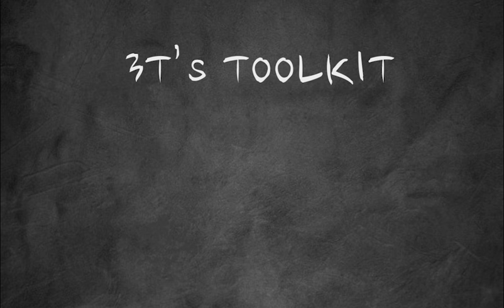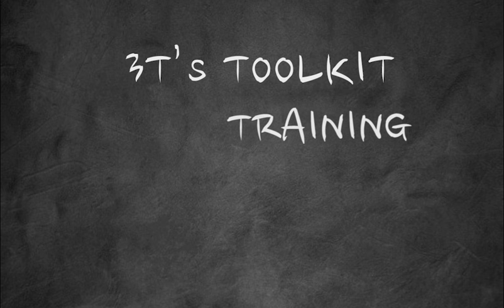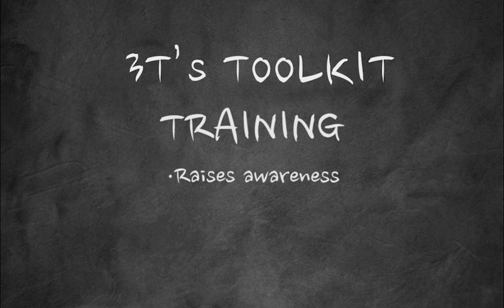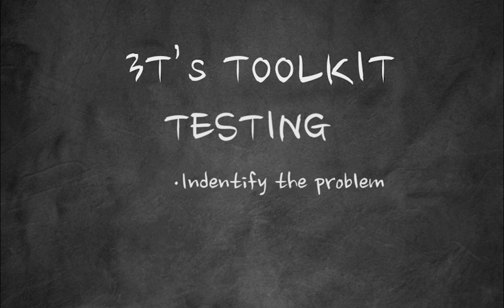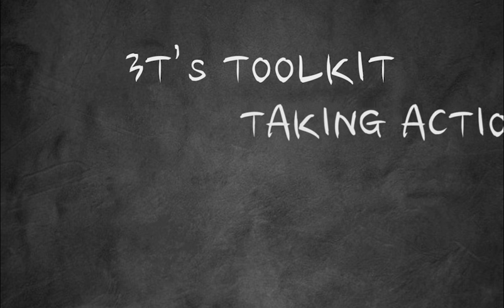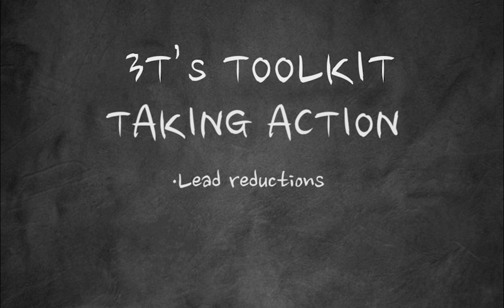The Three T's toolkit is a program for reducing lead in drinking water by training, which raises awareness of the potential occurrences, causes, and health effects of lead in drinking water, and helps guide the facility in developing a Three T's implementation plan. Testing the water to identify any potential problems, and by taking action — taking the necessary steps to correct or mitigate any identified sources of lead in drinking water.